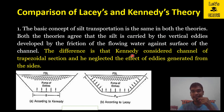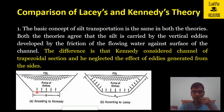The difference is that Kennedy considered a channel of trapezoidal section and neglected the effect of eddies generated from the sides. As per Kennedy, all eddies or turbulence are caused due to the bed of the canal only. But Lacey assumed that these eddies are caused at the complete wetted perimeter of the canal — developed on the bed as well as on the side slopes — so the complete wetted perimeter is responsible for the formation of eddies.